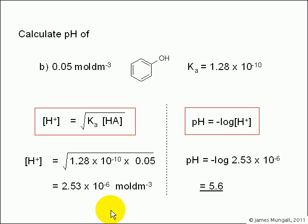Another really similar calculation: 0.05 mole per decimeter cubed of phenol with Ka 1.28 times 10 to the minus 10. We use this formula to work out the H+ concentration: square root of Ka times HA. In this case, square root of 1.28 times 10 to the minus 10 multiplied by the HA concentration 0.05 gives 2.53 times 10 to the minus 6 moles per decimeter cubed. Now we've got our H+ concentration, we can work out pH by doing minus log of it. Minus log of 2.53 times 10 to the minus 6 is 5.6, once again a sensible answer for pH of a weak acid.